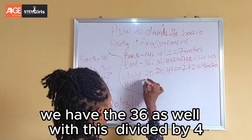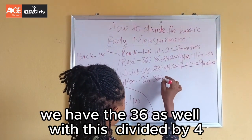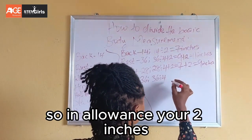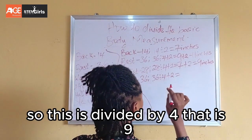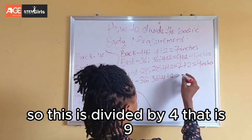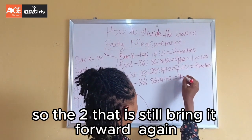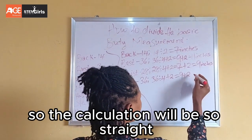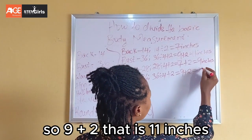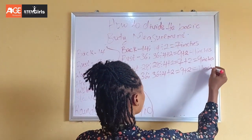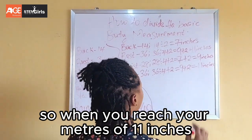Now we move on to the hips line. We have 36 as well, so 36 divided by 4 plus 2 inches sewing allowance. 36 divided by 4 is 9, and adding the 2 inches sewing allowance brings it to 11 inches. So when you reach your hips line, you make use of 11 inches.